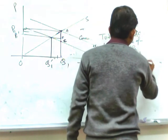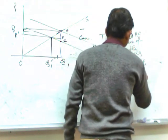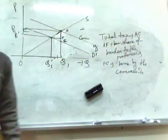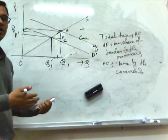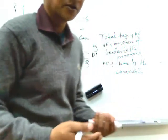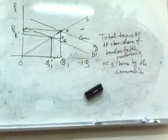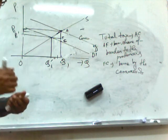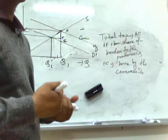AC is the total burden of taxation. AF is the share of burden shifted to the producers, and FC is borne by the consumers. From here it is clear that higher the price elasticity of demand, higher will be the burden that consumers can shift towards the producers when the government imposes a tax on consumers. Higher price elasticity of supply means lower will be the share of burden that consumers can shift towards the producers.